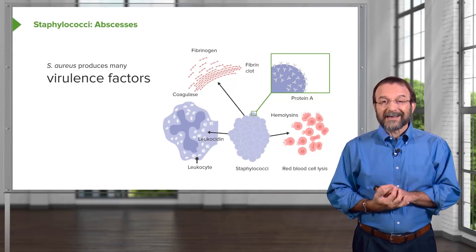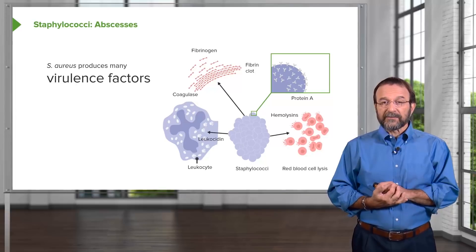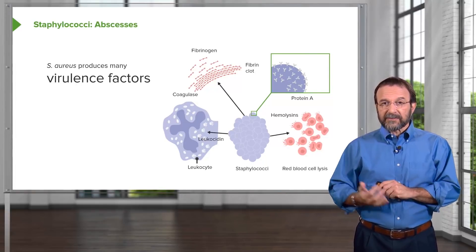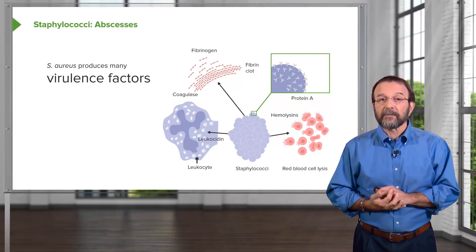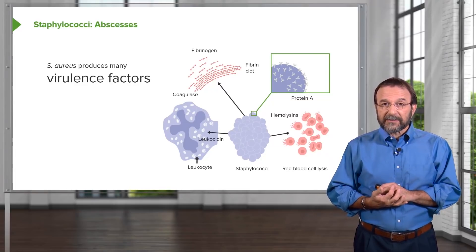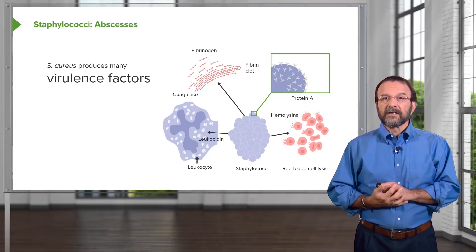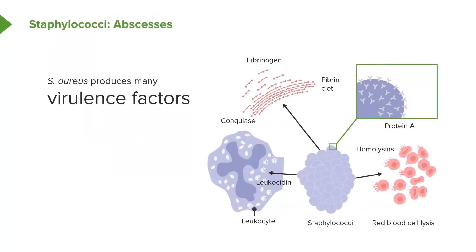Staph aureus makes a number of virulence factors — toxins and other proteins that help it spread and overcome host defenses. In the center of the slide are the staphylococci, elaborating a variety of proteins including leukocidins, hemolysins, protein A, coagulases, and proteins that help dissolve fibrin clots.